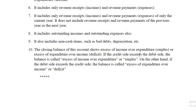If the credit side exceeds the debit side, the balance is called excess of income over expenditure or surplus. On the other hand, if the debit side exceeds the credit side, the balance is called excess of expenditure over income or deficit. That's all about receipts and payments account and income and expenditure account. In the next video we are going to learn about balance sheet and other related items. Thank you.